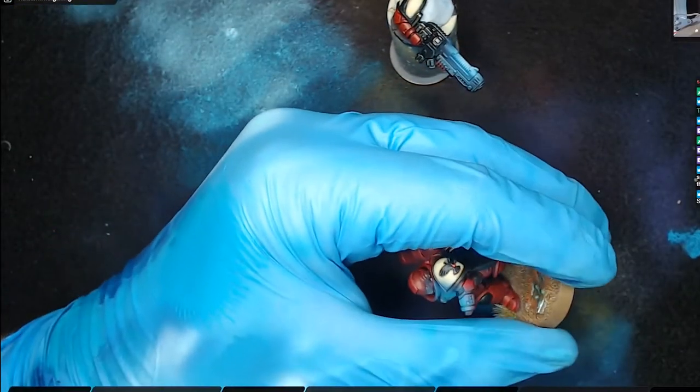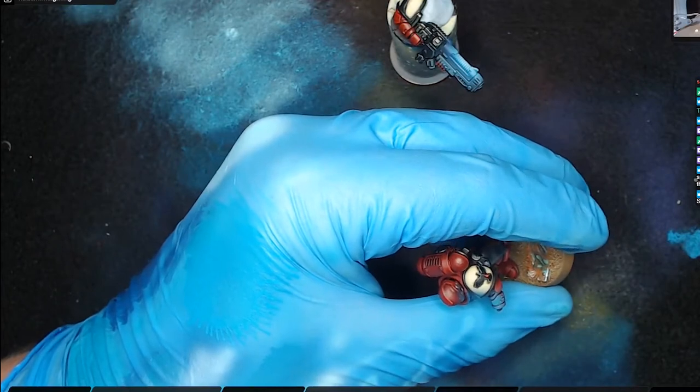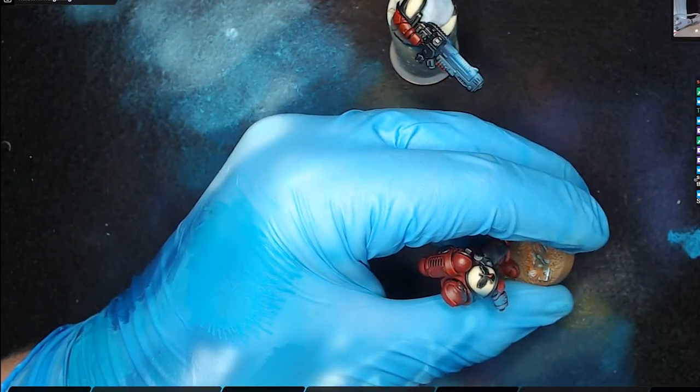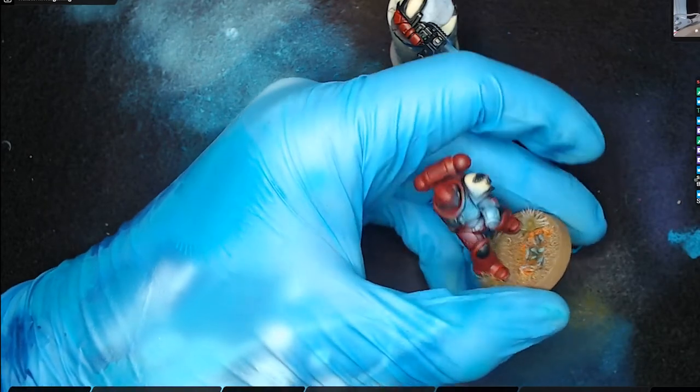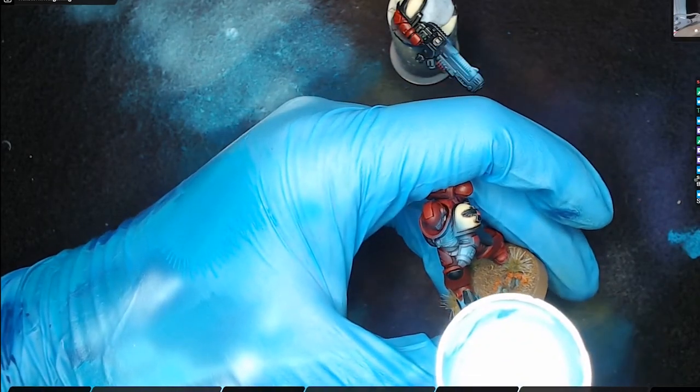So now on the actual Primaris Marine itself, we're just going to spray, but not even spray on the model, we're just going to spray near it on my glove, which will catch it ever so slightly like you can see there. And then on the chest, we'll just be very careful, you don't even have to go this high.